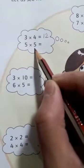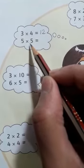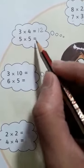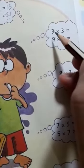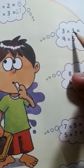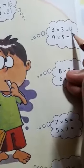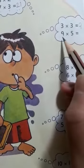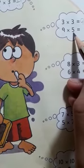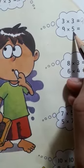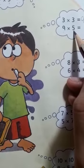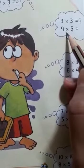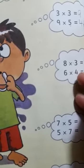Now 5 times 5. We read 5's table: 5 ones are 5, 5 twos are 10, 5 threes are 15, 5 fours are 20, 5 fives are 25. Continuing the 5's table: 5 sixes are 30, 5 sevens are 35, 5 eights are 40, 5 nines are 45.